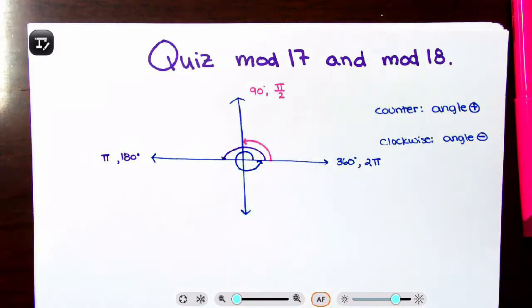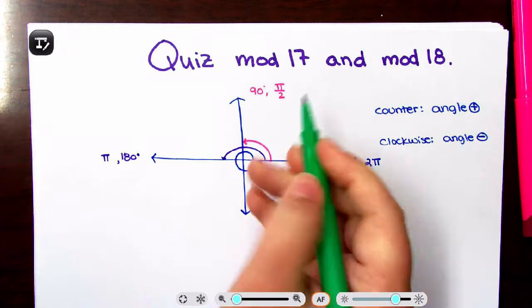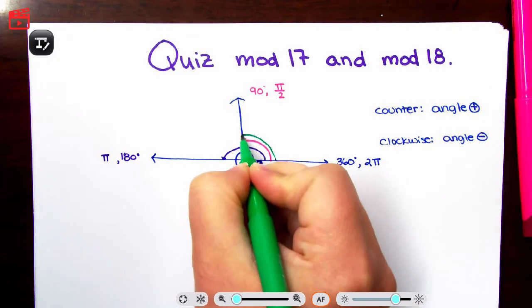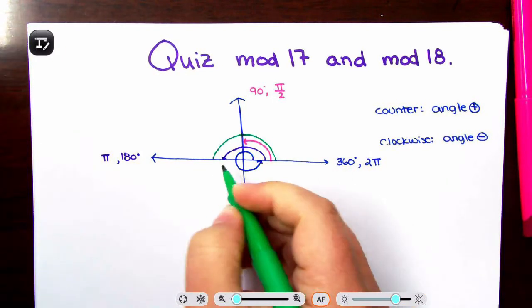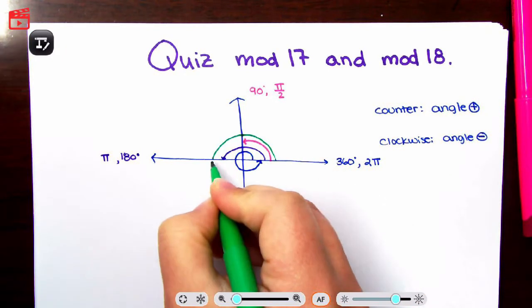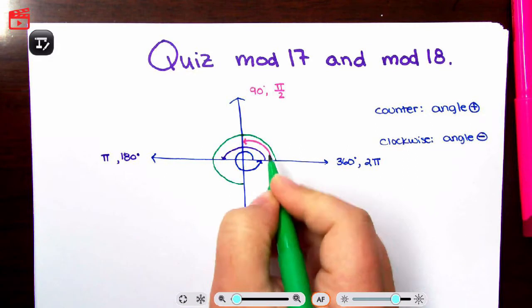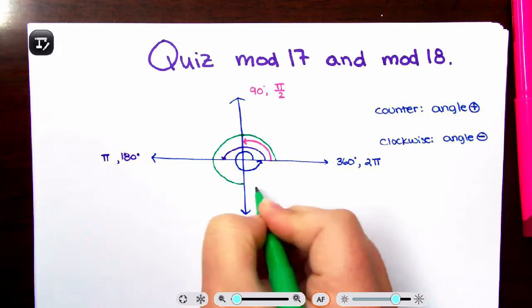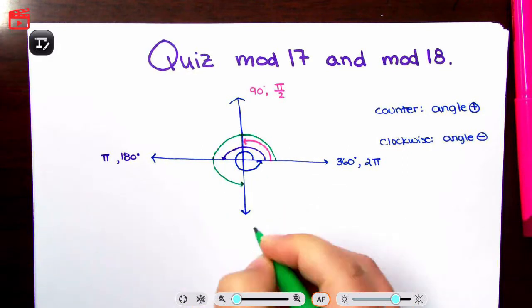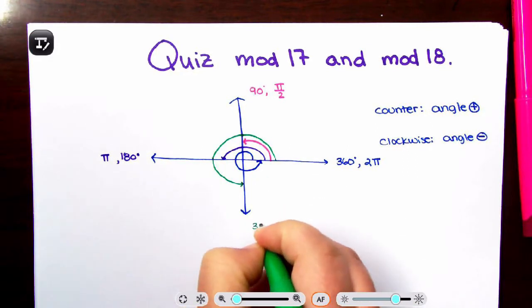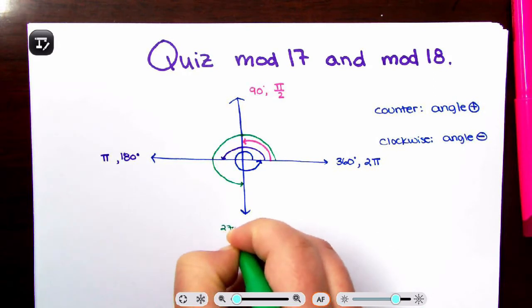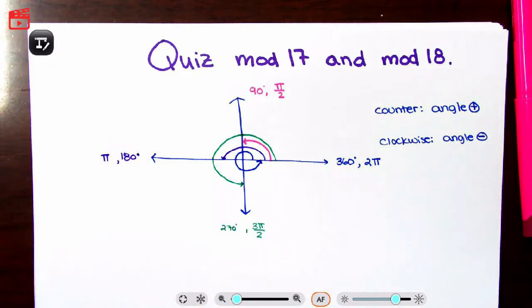If you go three-fourths of the way — 1 π/2 for one quarter, 2 π/2 for two quarters, 3 π/2 for three quarters — you are at 3π/2 or 270 degrees.